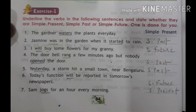Second: 'Jasmine was in the garden when it started to rain.' Here 'was' and 'started' show the past tense, so write simple past. Number three: 'I will buy some flowers for my granny.' Here 'will' and 'buy' show the future tense — write simple future. Number four: 'The doorbell rang a few minutes ago but nobody opened the door.' Here 'rang' and 'opened' show the past tense — write simple past.